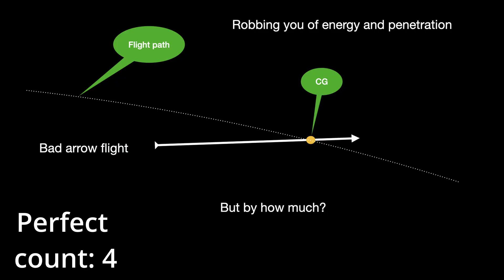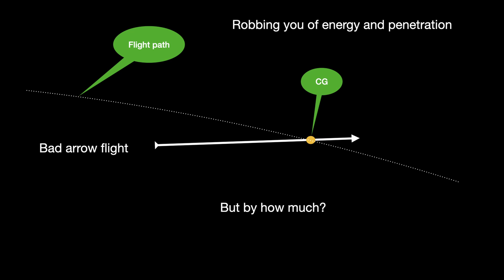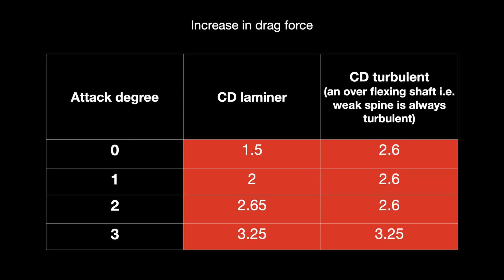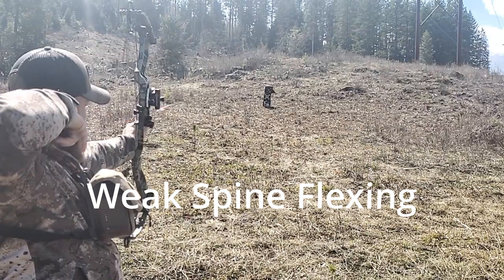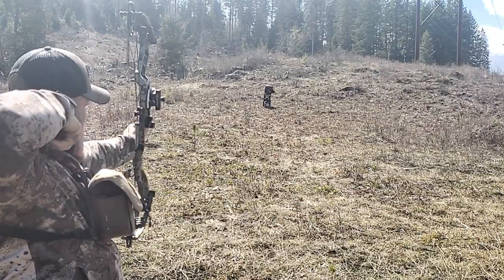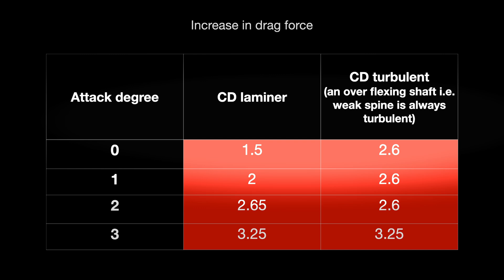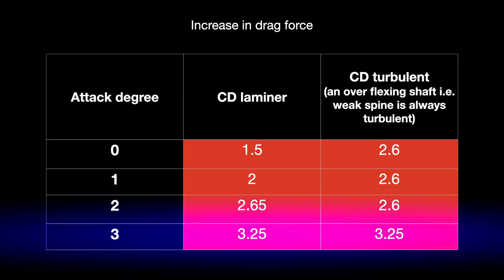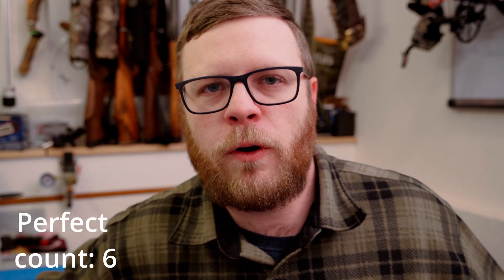We're going to talk about how you lose energy just from drag alone. In the previous drag video, we assumed perfect aero flight — but what if we don't have that? For example, a nock-low aero flight changes our coefficient of drag. There are two methods: poor aero flight and a weak shaft. A weak shaft bends and flexes, inducing turbulent flow that almost doubles the coefficient of drag from 1.5 to 2.6. And a three-degree offset of flight gets you over double the amount of drag.